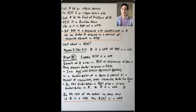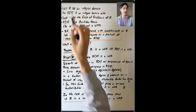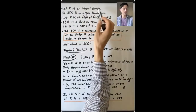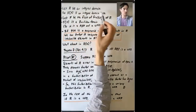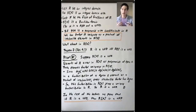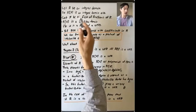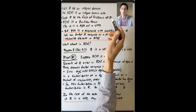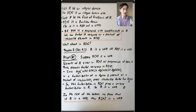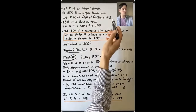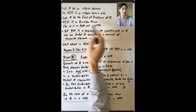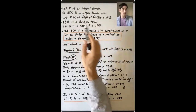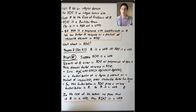In this lecture, we'll focus on section 9.3 of Dummit and Foote. We'll start by noting that when R is an integral domain, R[x] is also an integral domain. With an integral domain, we have the field of fractions containing a subring isomorphic to it. If F is the field of fractions, then F[x] is a Euclidean domain, so it's a PID, and so it's a UFD.